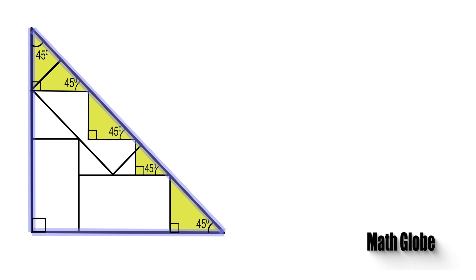Next, let's name the hypotenuses of the small triangles as A, B, C, and D.